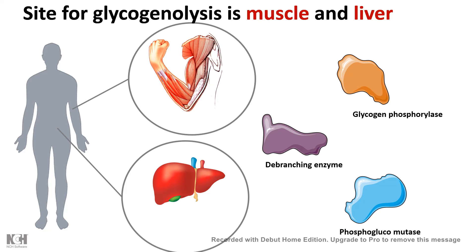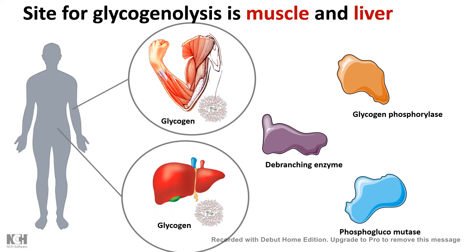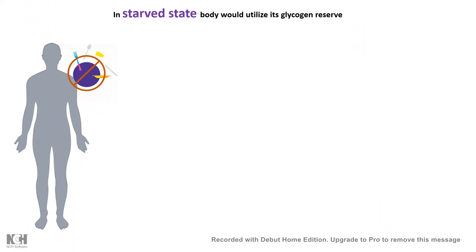Additionally, the substrate — glycogen — which is broken down into glucose is actually stored in muscle and liver as a glucose reserve. That is why muscle and liver are the primary sites for glycogenolysis.